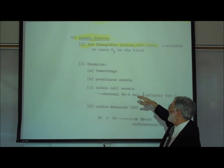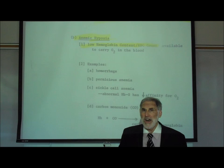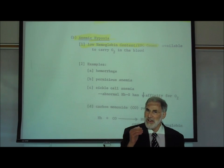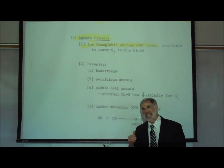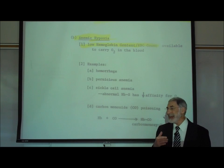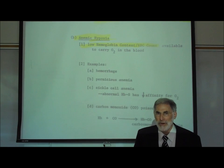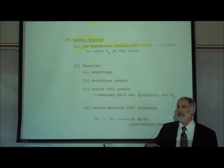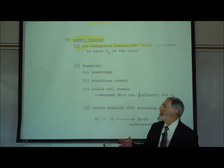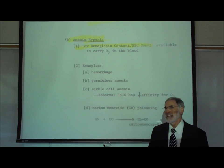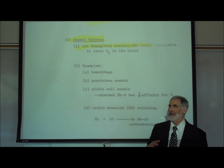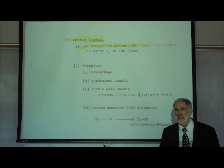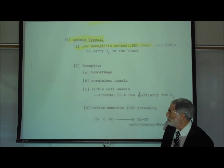Another type of anemic hypoxia is pernicious anemia — a vitamin B12 or cyanocobalamin deficiency. Therefore, the red blood cells have a lower amount of hemoglobin and carry less oxygen than normal. Another cause of anemic hypoxia is sickle cell anemia — a genetic inability to make normal hemoglobin. The hemoglobin produced is an abnormal form called hemoglobin S, rather than the normal hemoglobin A, and it carries less oxygen than normal hemoglobin does.